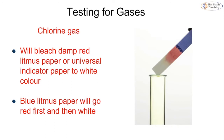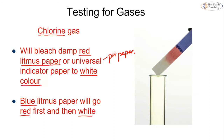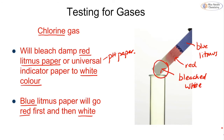To test for chlorine gas, take red litmus paper or universal indicator paper and place it in the gas — it will bleach the litmus paper to a white colour. If you use blue litmus paper, it will first go red and then go white. You can see the blue litmus paper going red and then being bleached white, and that bleaching to white is the positive test for chlorine.